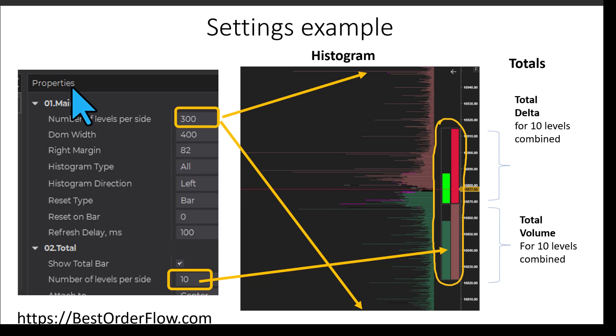Here's how we set up the histogram and totals in properties. The number of levels per side is selected as 300, meaning there are 300 levels in both directions. Sometimes we do 400 levels because we want to consider where price may go in the future and what levels it may attract to.